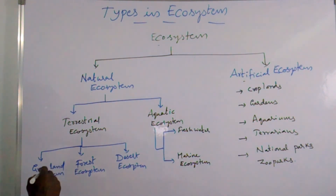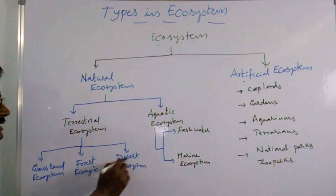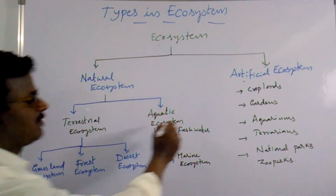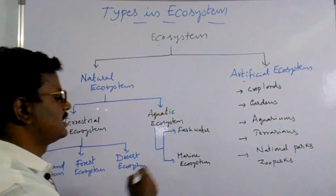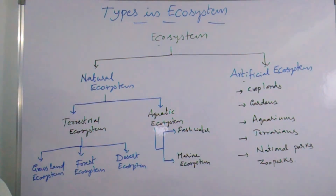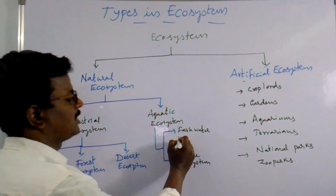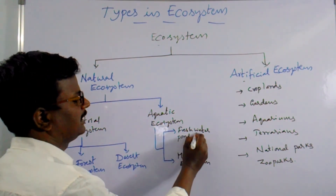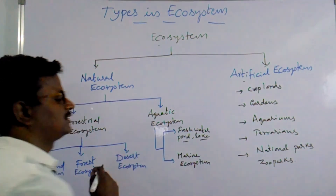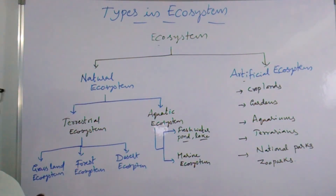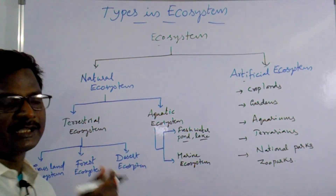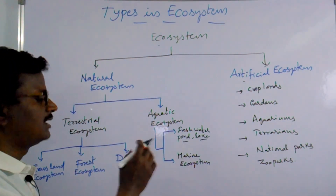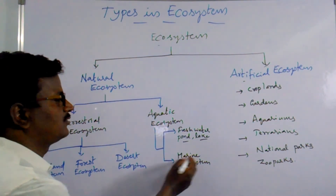Terrestrial ecosystems are three types: grassland ecosystems, forest ecosystems, and desert ecosystems. Aquatic ecosystems are two types: freshwater ecosystems and marine water ecosystems. Freshwater ecosystems include ponds and lakes. Marine water ecosystems include deep water, shallow water, and cold water ecosystems.